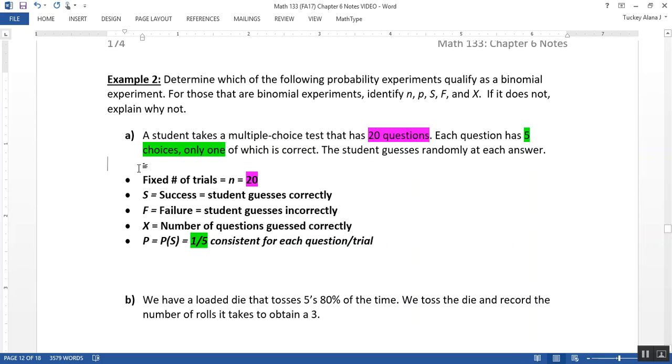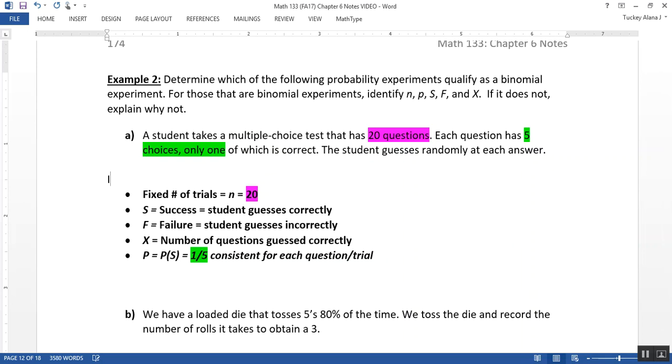So this is binomial. So this is binomial experiment, and we've just proven it. Right? So we have a consistent probability of success. The trials are independent. There are two possible outcomes, and there's a fixed number of trials.